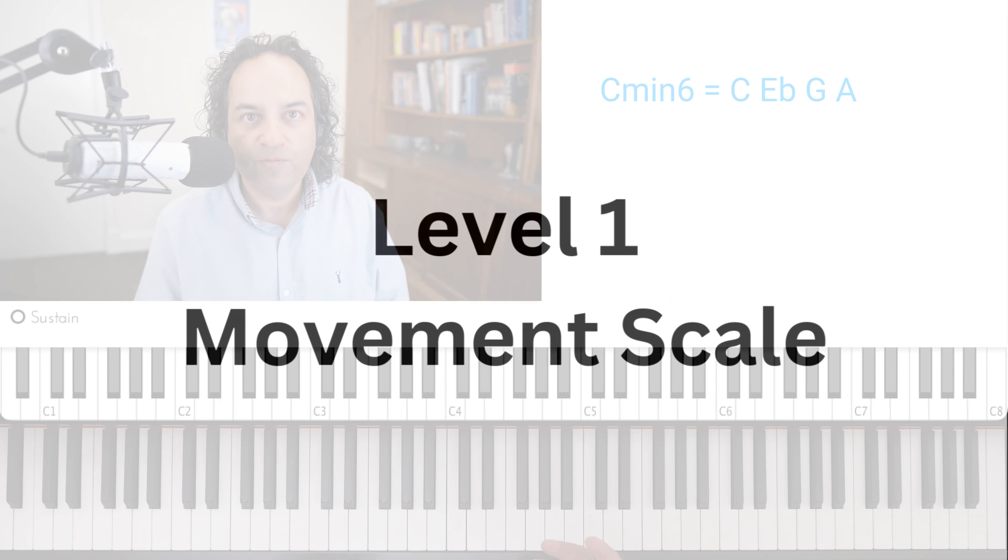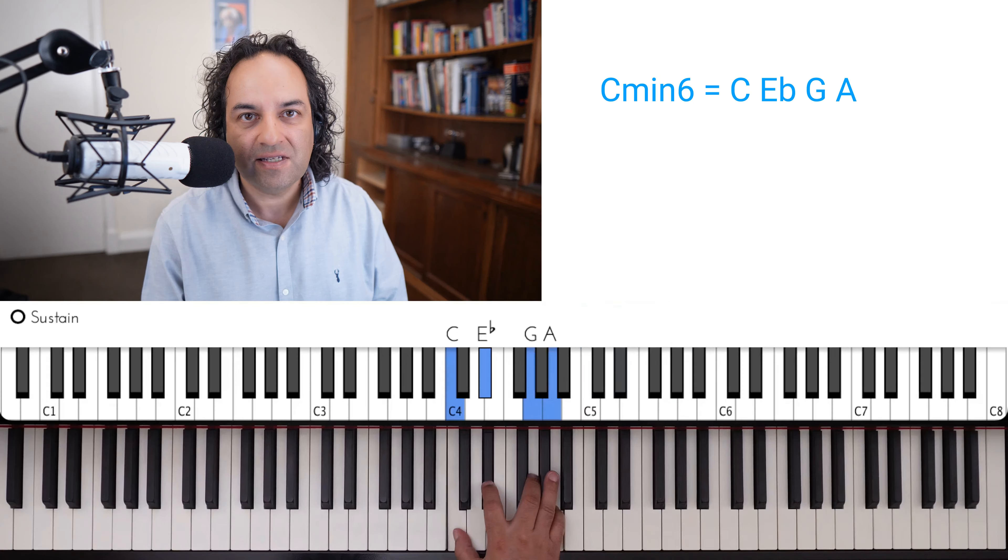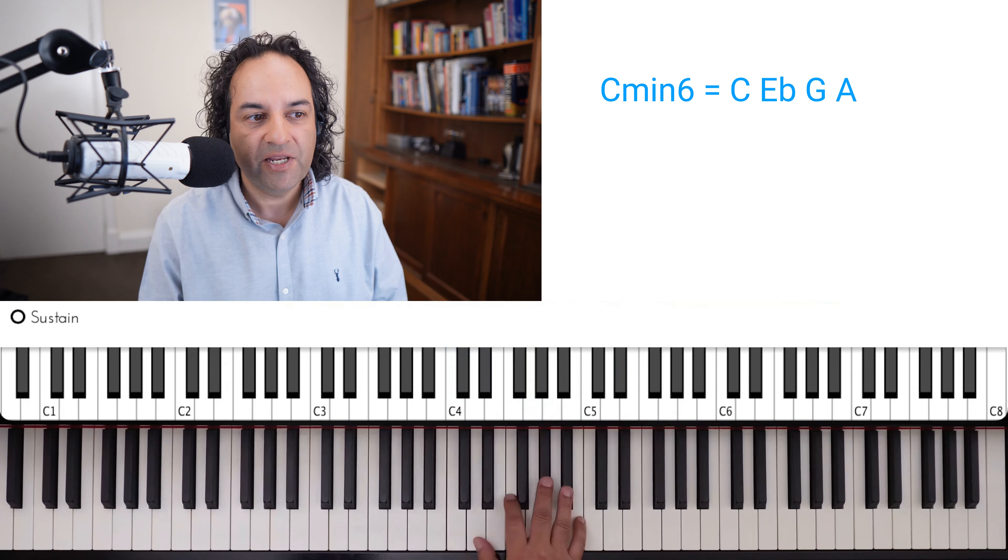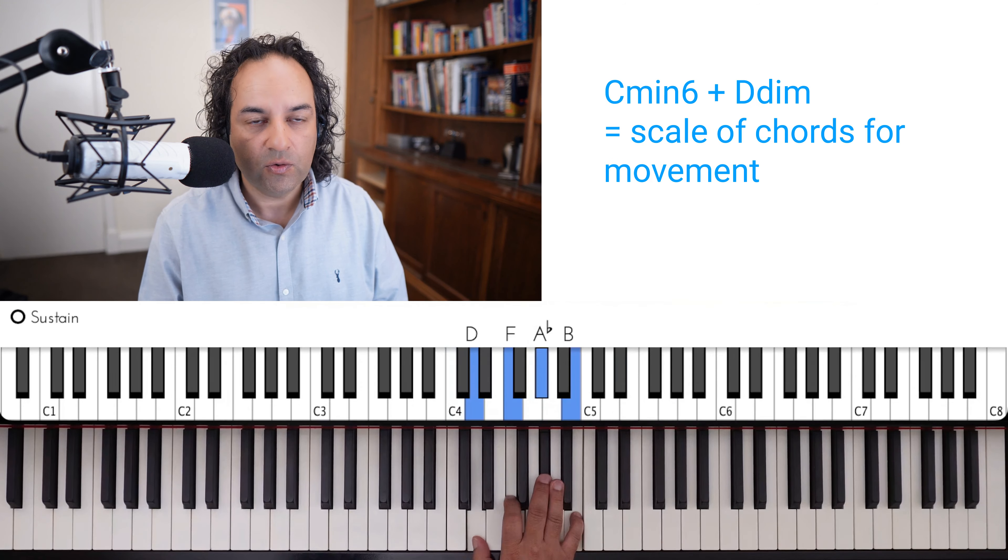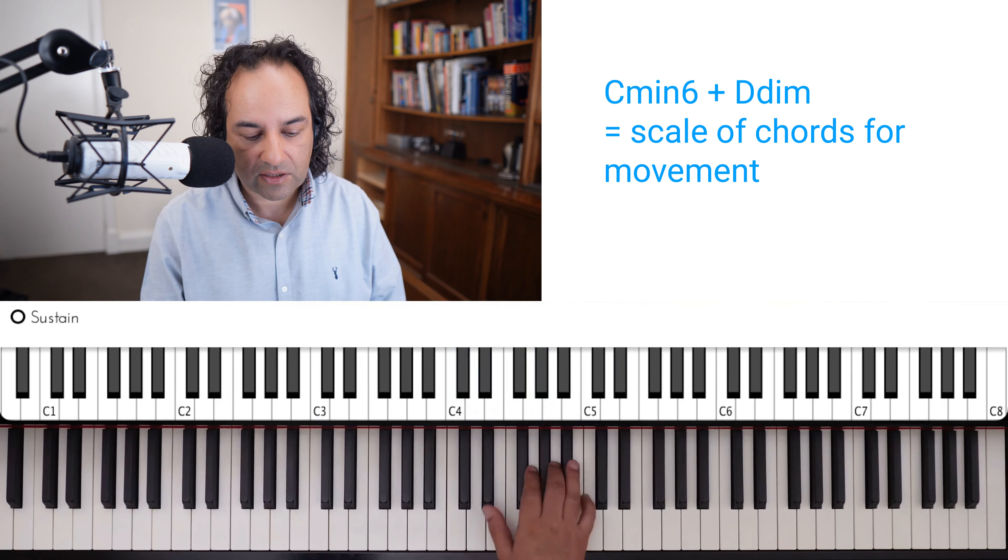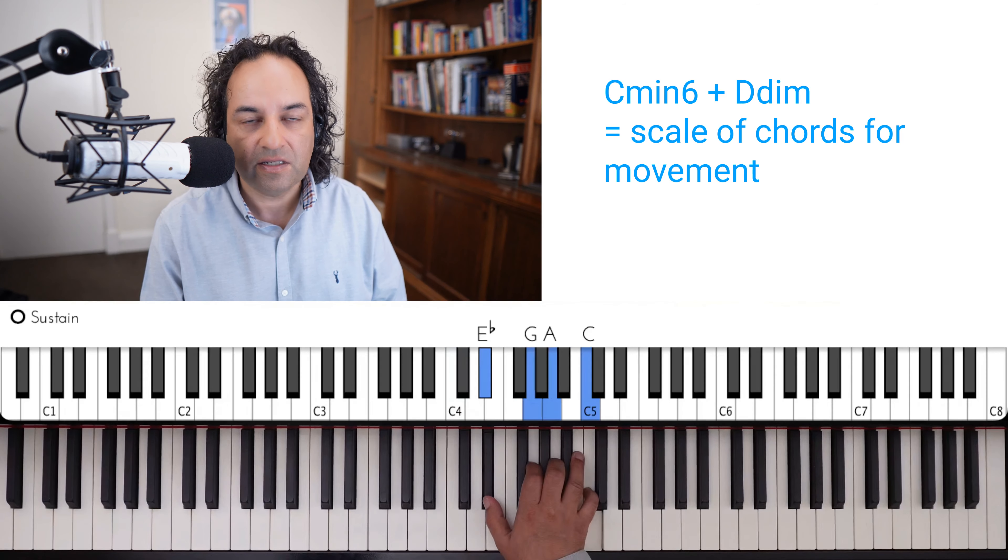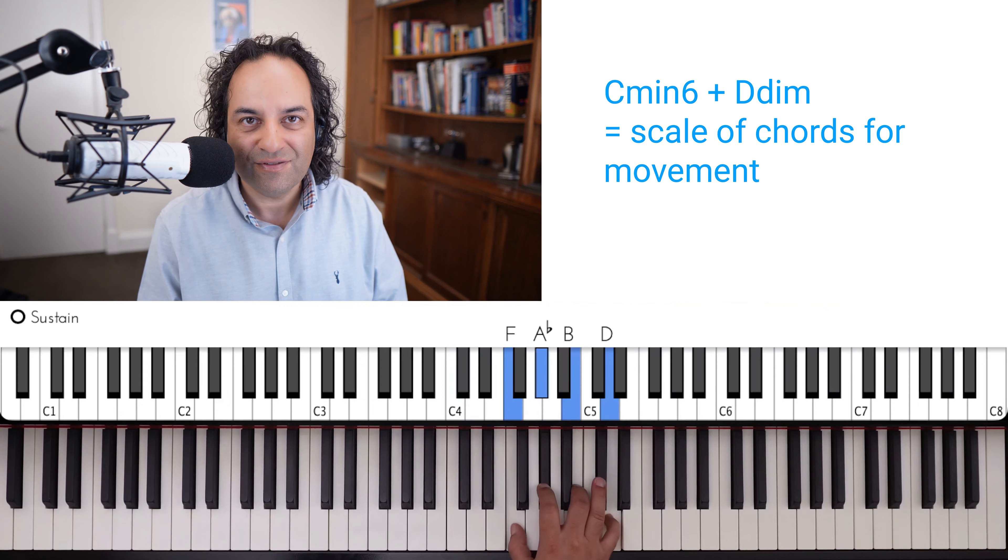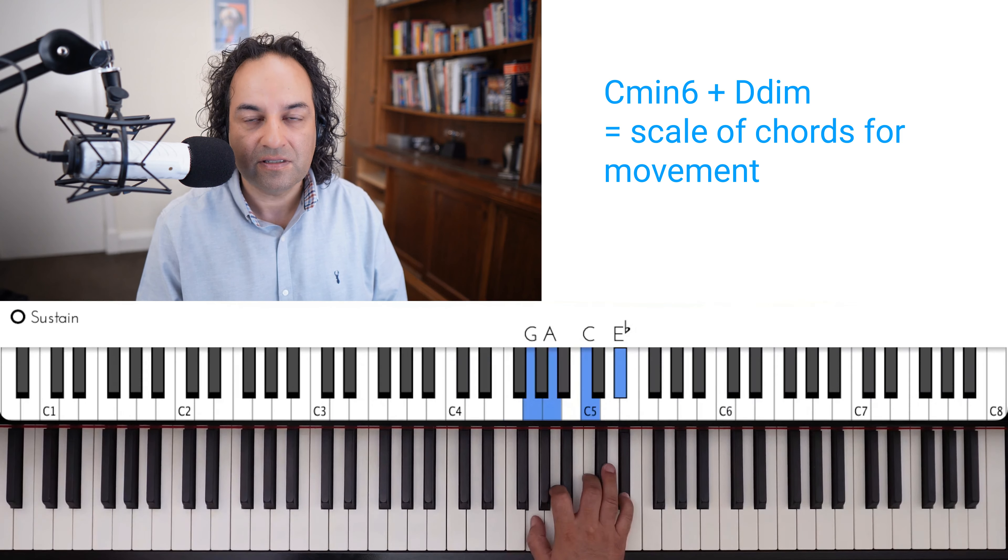In terms of early movements, if you alternate that C minor six with a D diminished chord, then you get a scale of chords. So next chord will be a C minor six inverted, a D diminished inverted, a C minor six inverted, et cetera.